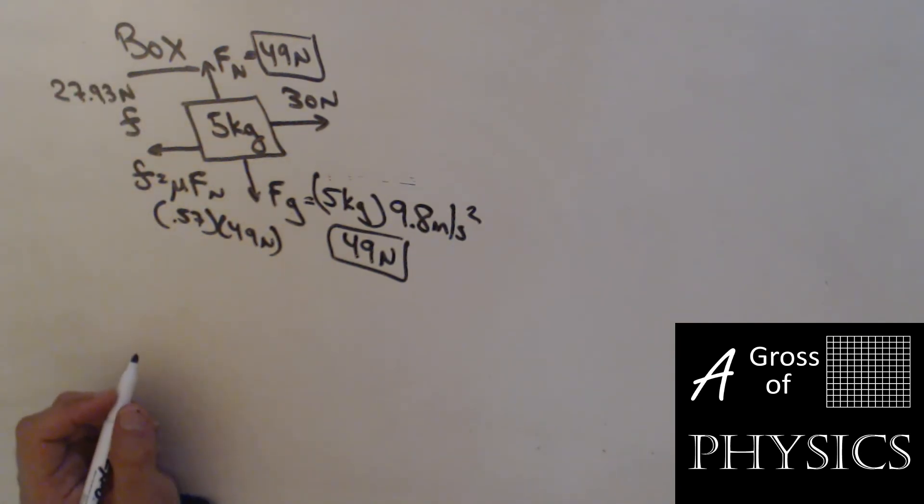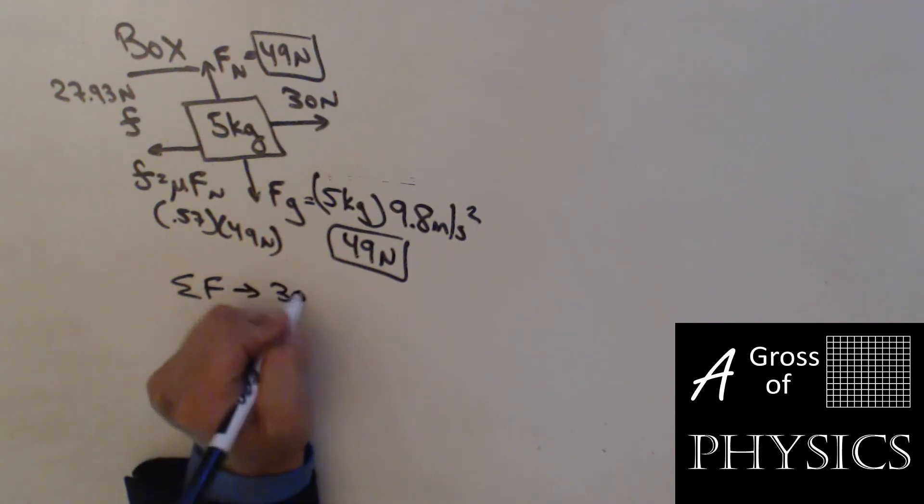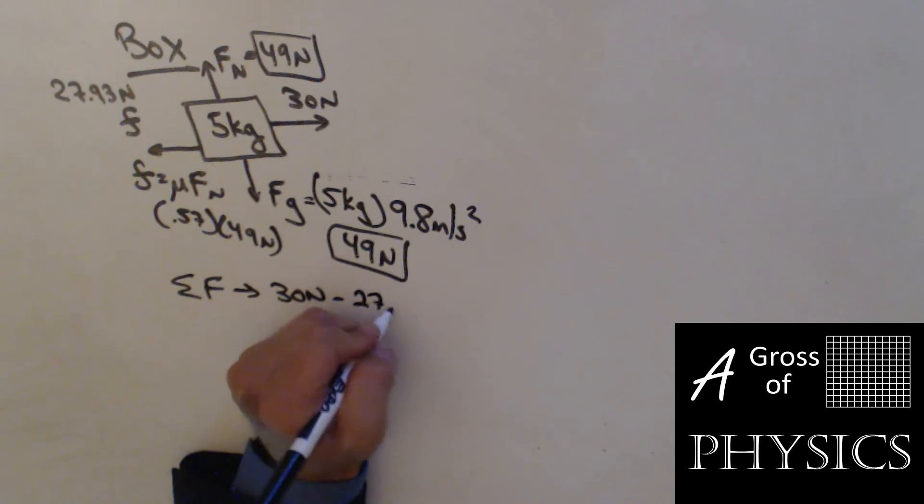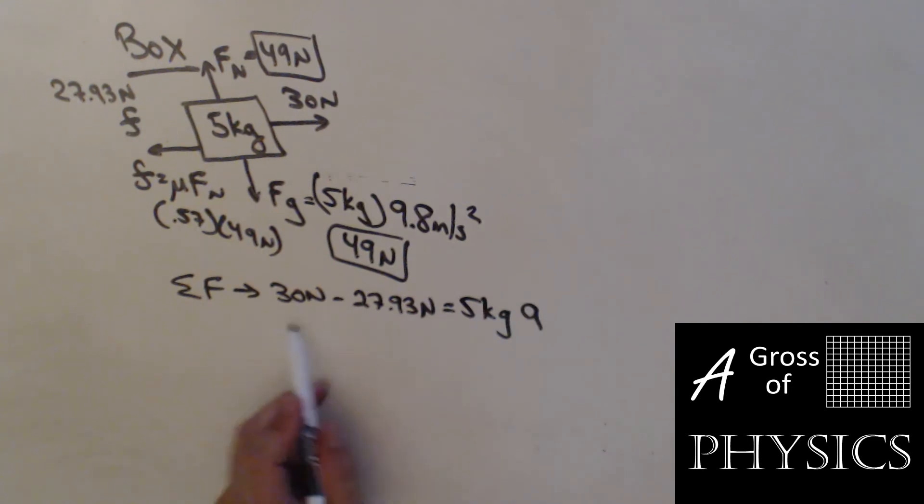We're barely moving the box at all because there's so much friction. The 30 newtons is barely moving the box. However, if I want to find the net force, I would say 30 newtons minus 27.93 newtons equals 5 kilograms times a, which is F equals ma. 30 minus 27.93 is 2.07 divided by 5. My acceleration is 0.414 meters per second squared.